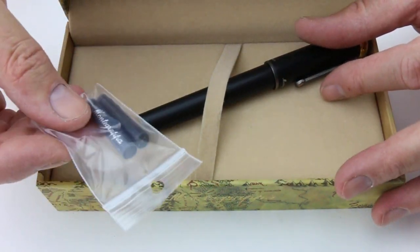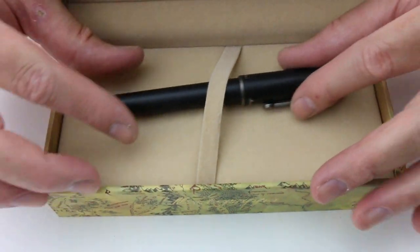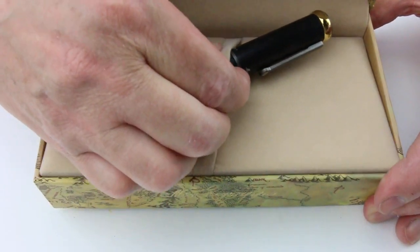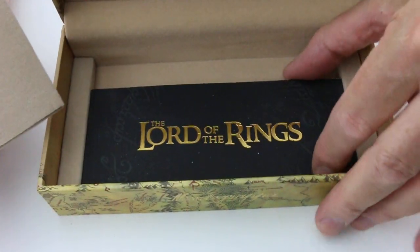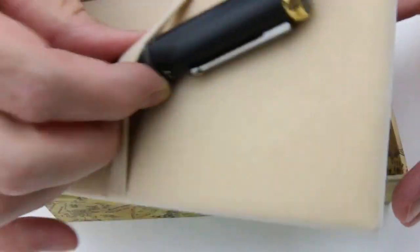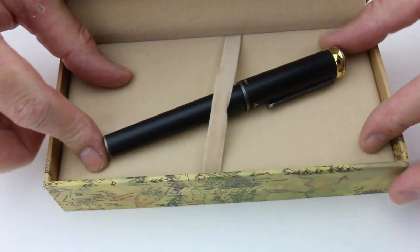Included with the pen are some ink cartridges. There's a false bottom of the box and underneath is information about the pen: warranty, use and care guide, and everything you need.